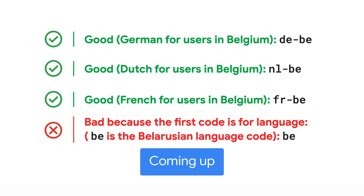First things first, make sure the attributes are valid. Use valid language-country code variations, and then make sure that all variations link to each other. Last but not least, make sure to also include a self-referential link. For example, this German page references itself along with the English and Japanese versions.